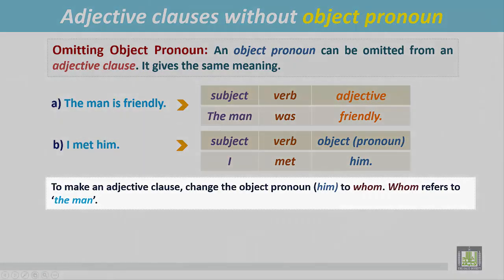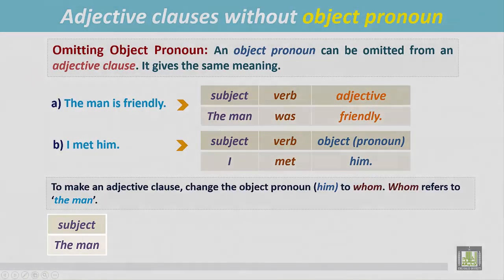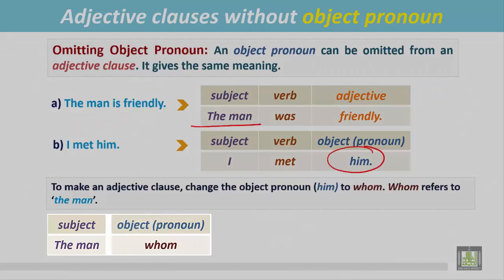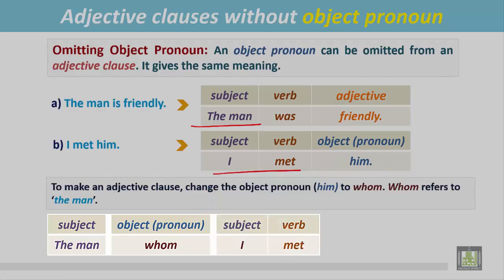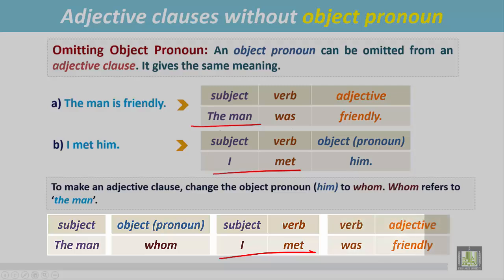To make an adjective clause, we change the object pronoun to 'whom', and 'whom' refers to 'the man'. See how we join: first we write 'the man', then we change 'him' to 'whom'. The man whom I met — that's the first part of the second sentence — and then the remaining part of the first sentence: 'was friendly'.